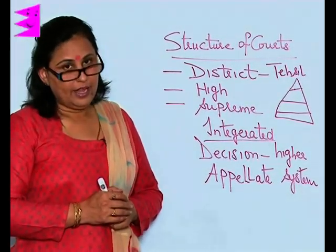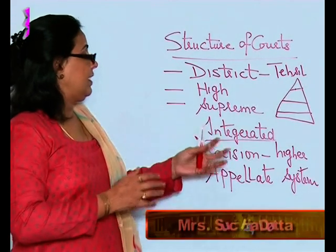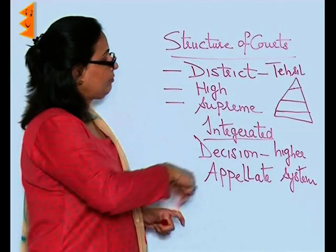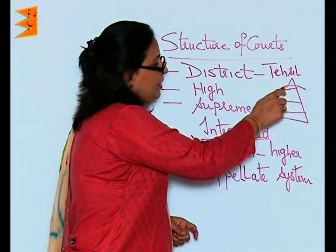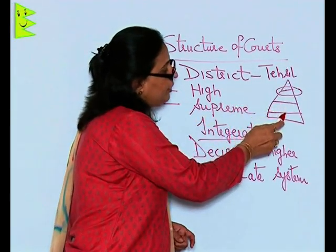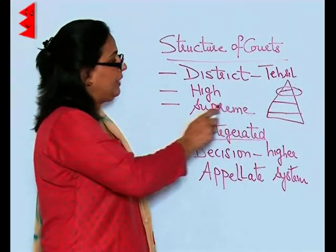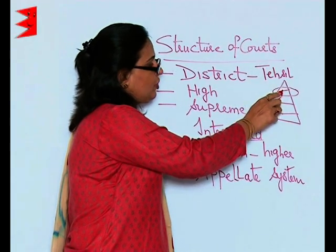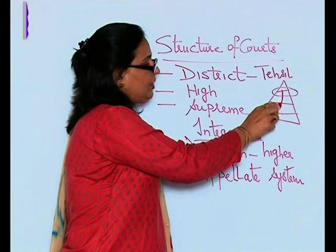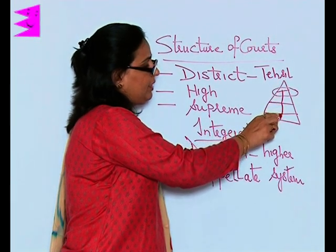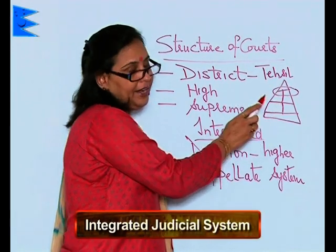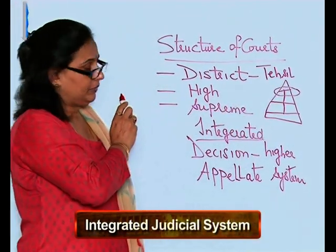Now some people ask whether the judiciary in India is integrated — yes, of course it is. The biggest evidence of this integration is that the decision made by a higher court is binding on the lower courts. The Supreme Court's decision is final and cannot be challenged, and the high court's decision is binding on the subordinate courts. So it is an integrated judicial system.